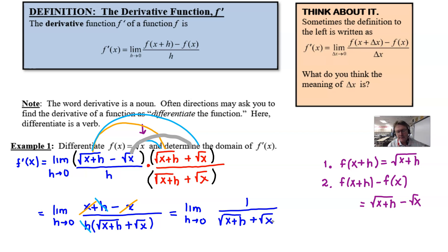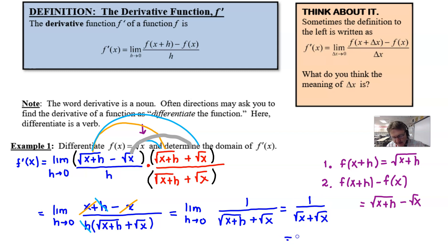Now you can green light and plug zero in for h. Doing so gives 1 over √x + √x, and simplifying that yields 1 over 2√x. That is your result for f prime of x.